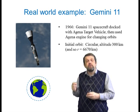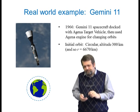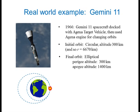They fired the rocket motors and boosted to an elliptical orbit. The perigee remained the same — 6,670 km from Earth's center — but the apogee altitude reached 1,400 km above the surface, more than 1,000 km higher. At the time, this was the world altitude record, not broken until astronauts headed for the Moon a couple of years later.